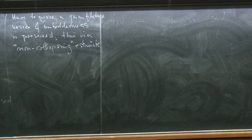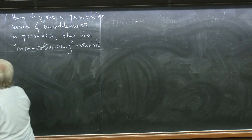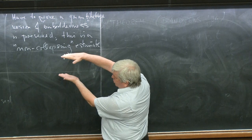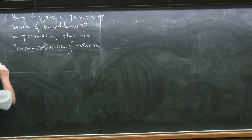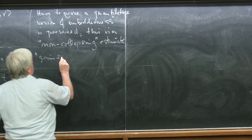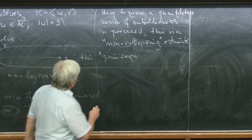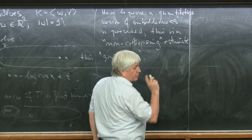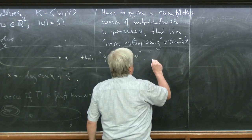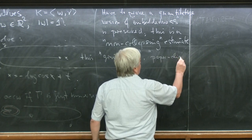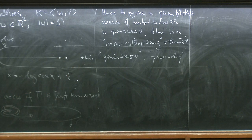Non-collapsing means, usually for minimal surfaces, that you don't have sheets coming together. If this Grim Reaper picture happens, this means you have two sheets of the curve coming arbitrarily close together compared to the length of the curve. This is collapsing. So this Grim Reaper — that's how it's called, Richard Hamilton's notation — is collapsing.